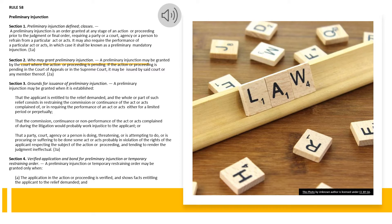Section 2. Who May Grant Preliminary Injunction. A preliminary injunction may be granted by the court where the action or proceeding is pending. If the action or proceeding is pending in the Court of Appeals or in the Supreme Court, it may be issued by said court or any member thereof.